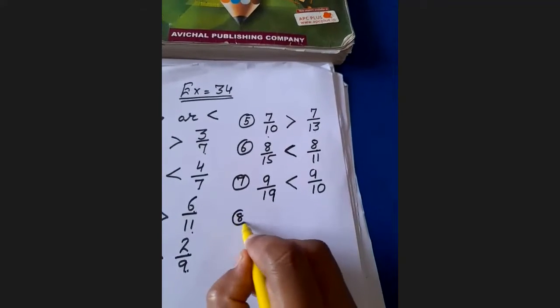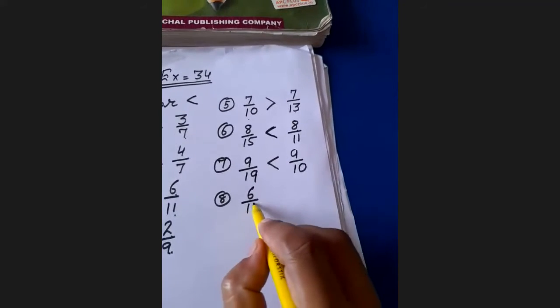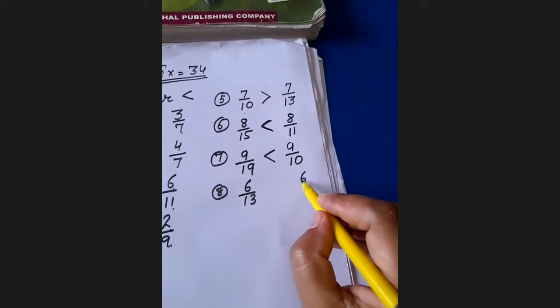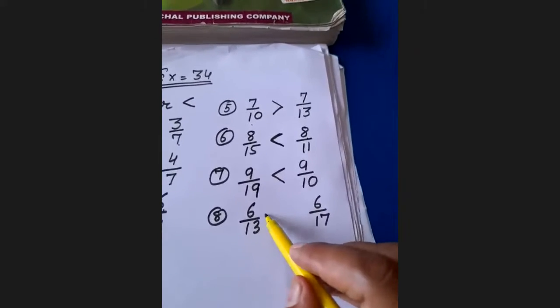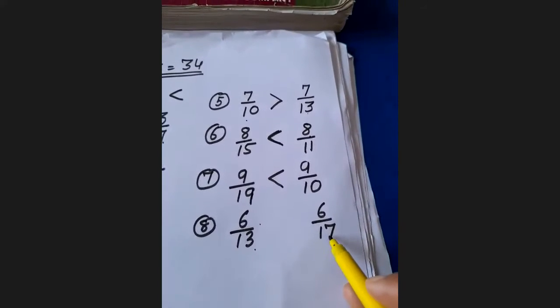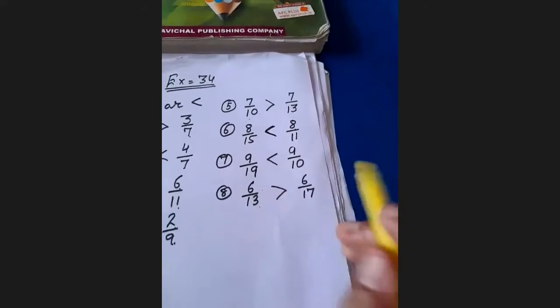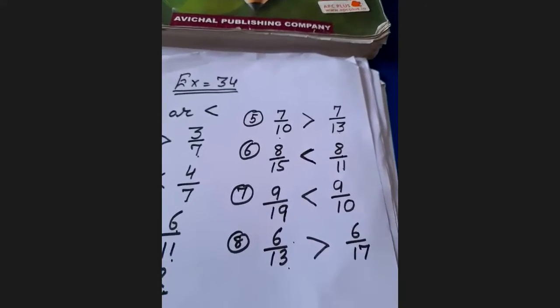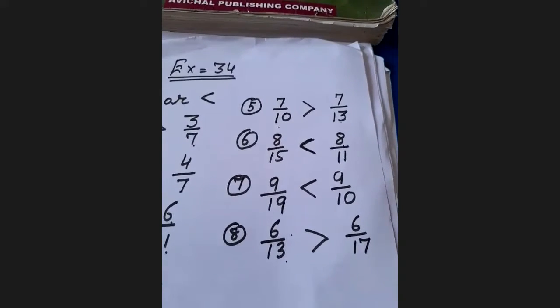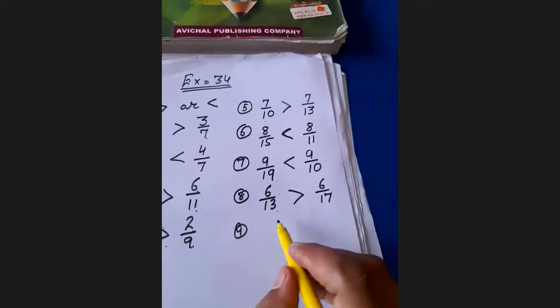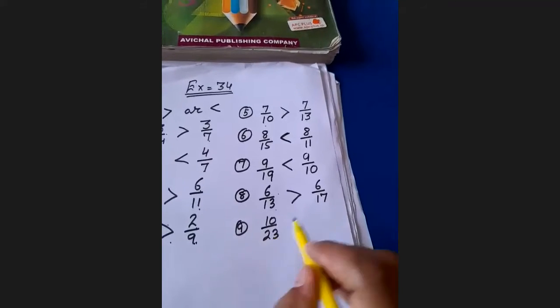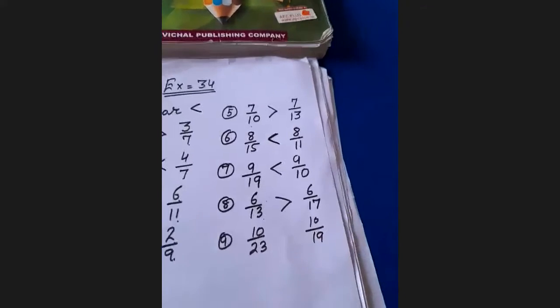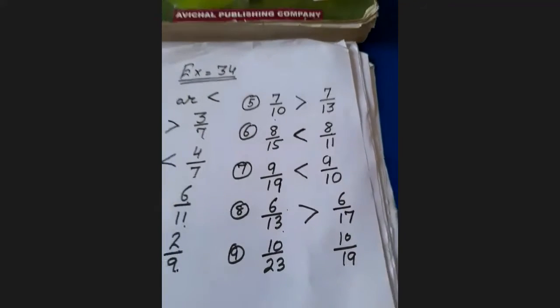Eighth question: 6 upon 13 and 6 upon 17. The numerator 6 is the same. The denominator is 13 and 17. Since 13 is a smaller denominator, 13 is greater than 17 as a denominator. Ninth question: 10 upon 23 and 10 upon 19. Numerator 10 is the same. Denominator is 23 and 19. Since these are denominators, 23 is greater than 19 as a denominator, so 10 upon 23 is less than 10 upon 19.